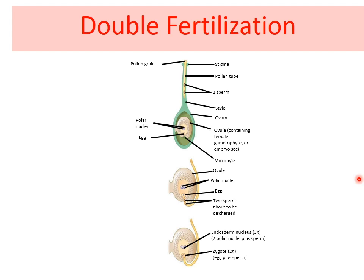It enters the ovule through the micropyle. Of the two sperm cells, one sperm fertilizes the egg cell forming a diploid zygote. And another sperm fuses with the two polar nuclei forming a triploid cell that develops into endosperm.